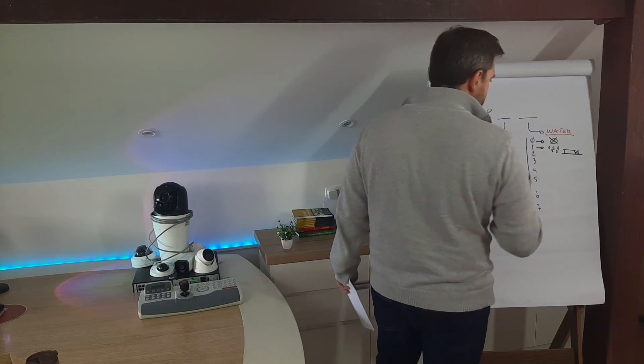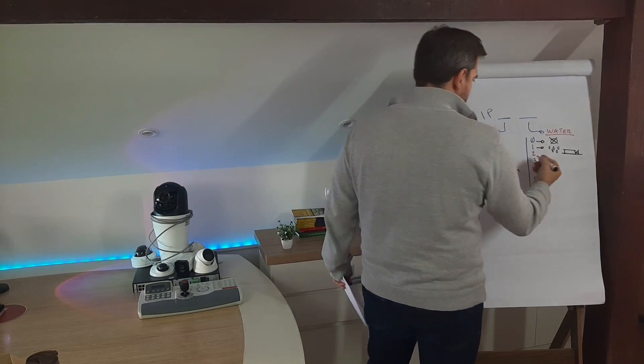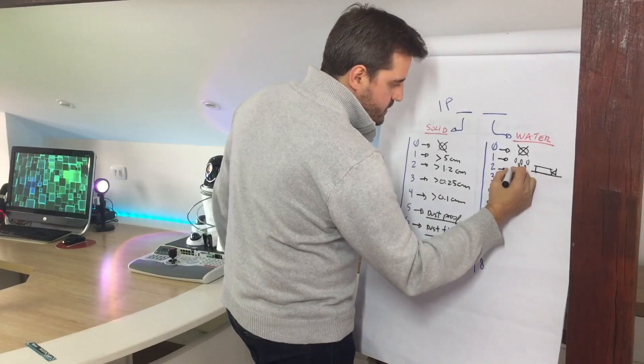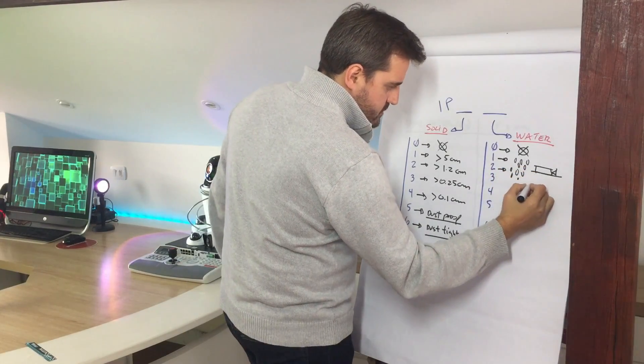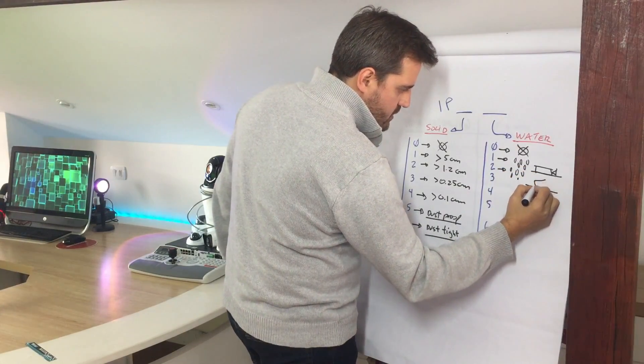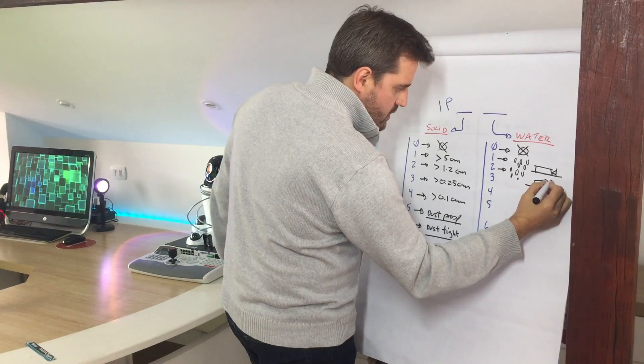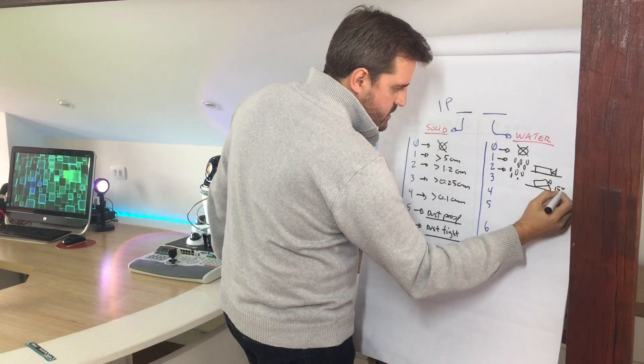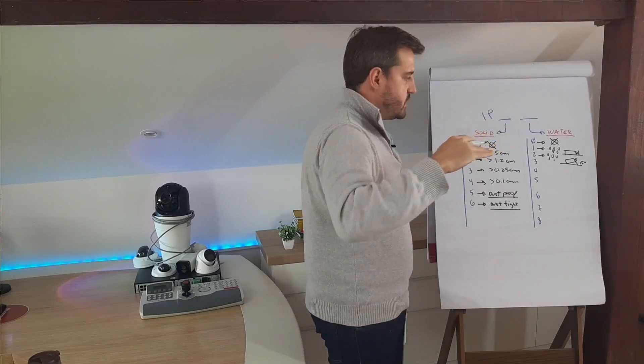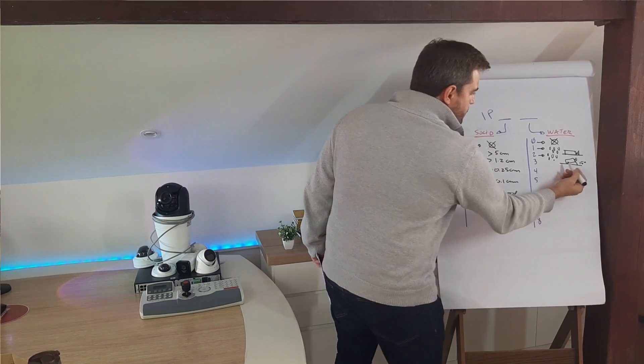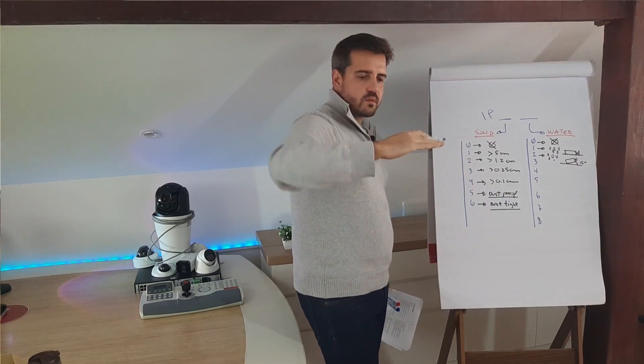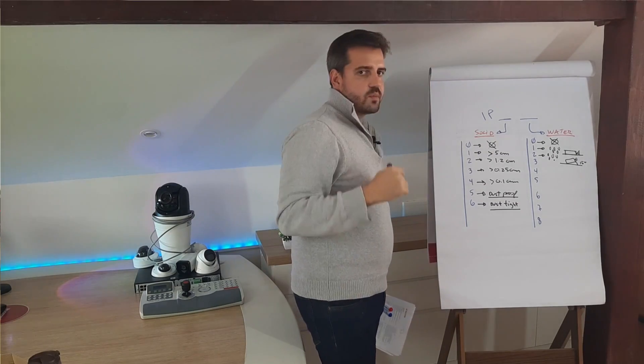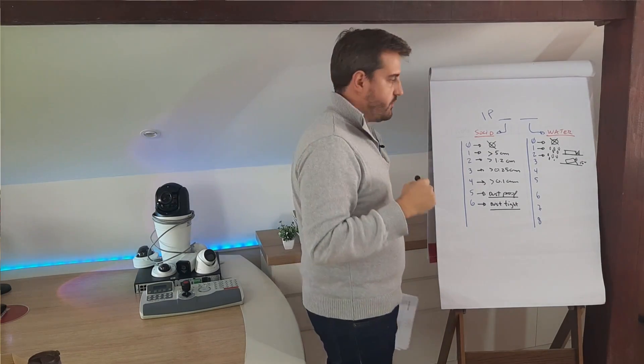So this will be the protection class one. So the class two is spray or a few drops with the camera tilted up to 15 degrees, so comparing to the horizontal axis. So the camera tilted 15 degrees, it will be able to receive a few drops or spray of water.